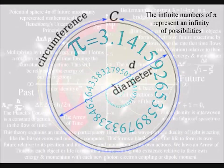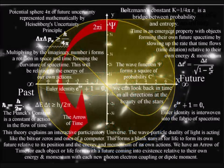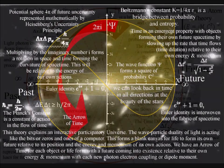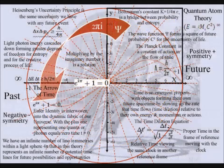Therefore, we find pi and the imaginary number i in Euler's identity, representing the dynamic geometry of space-time, that is relative to the constant e, as the future unfolds photon by photon.